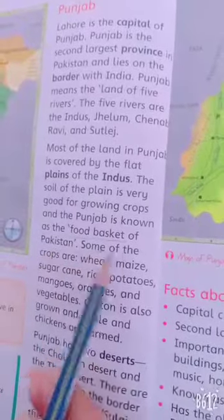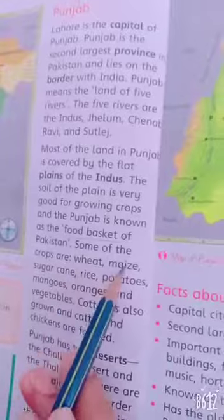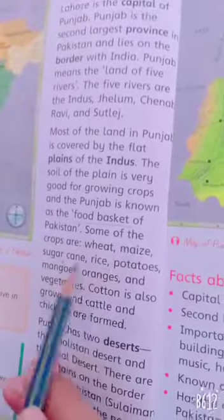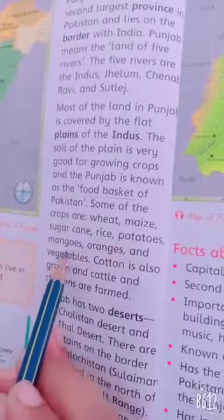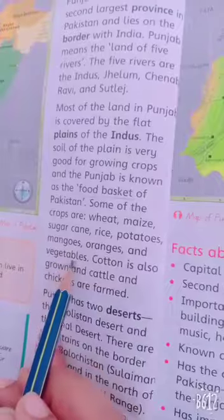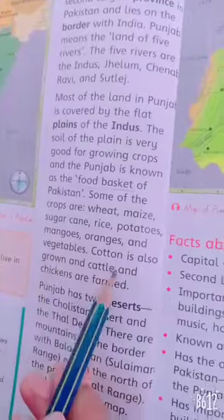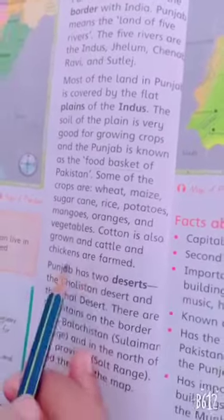Some of the crops grown are wheat, maize, sugarcane, rice, potatoes, mangoes, oranges and vegetables. Cotton is also grown, and cattle and chickens are farmed.